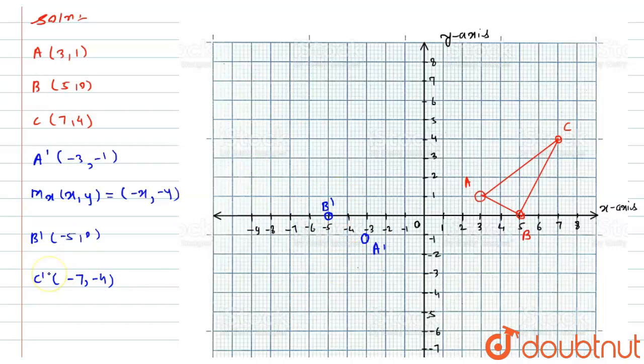Now the C dash point is (-7, -4), so it will be nothing but onto the X axis minus 7, onto the Y axis minus 4, so it will be something over here. Let's say this as C dash point, now if I will join these points B dash to C and C dash to A and similarly to B dash to A, so this will be nothing but form a triangle.